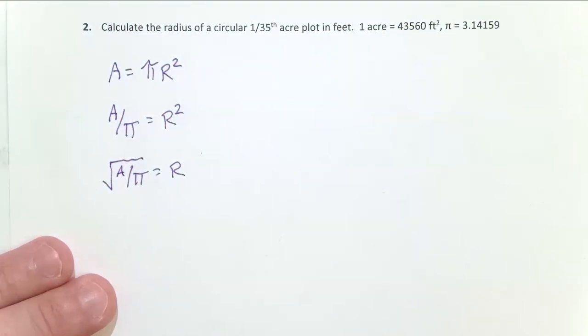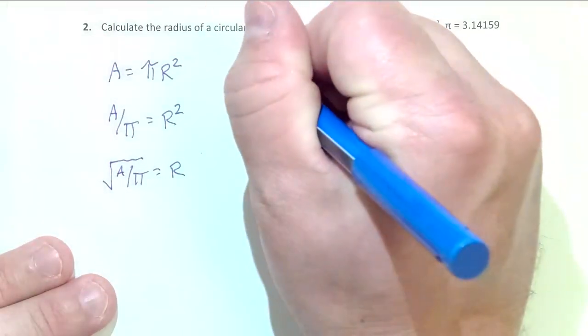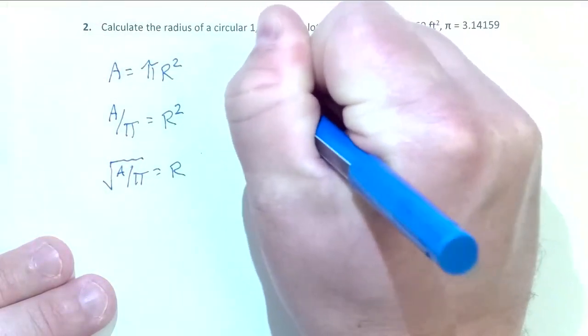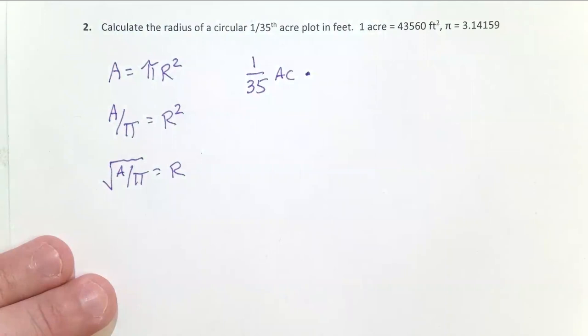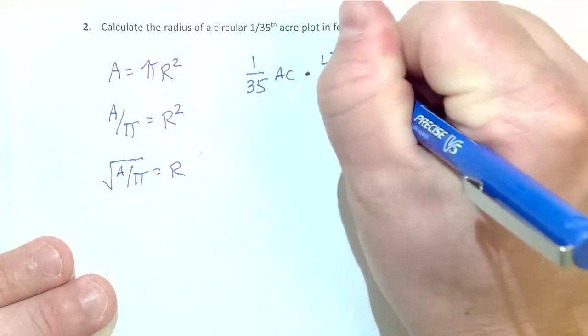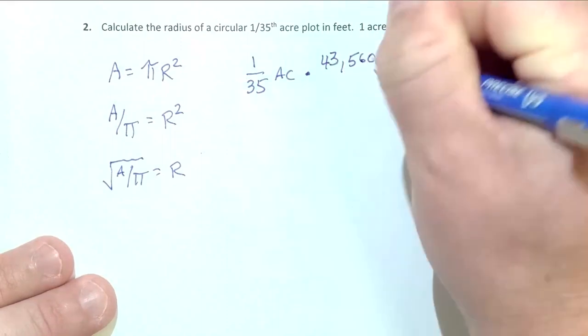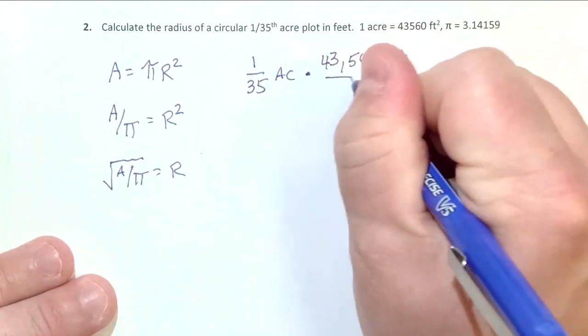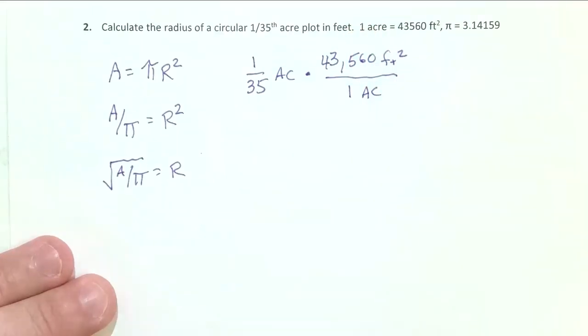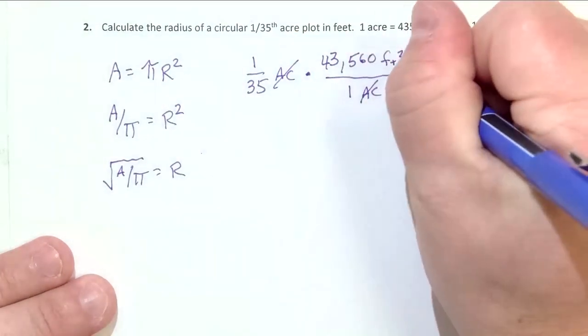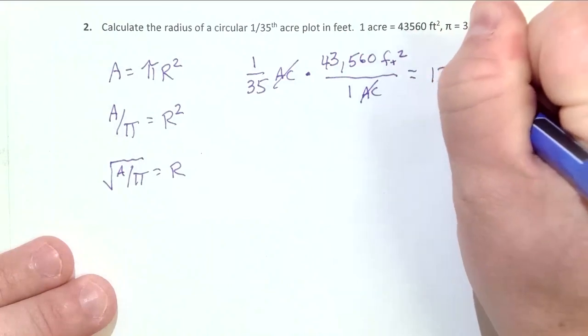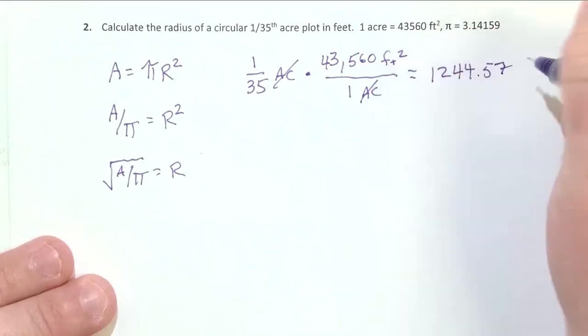As we saw with our earlier problem, problem number one, my area here is in acres, and I'm going to need that in square feet. So I need to convert. And we use the same process we did in problem one: 1/35 acres times our conversion, which is given to us here, 43,560 feet squared per one acre. Look at my units, they cancel out, and I'm left with units of square feet. And so this equals 1,244.57 feet squared.